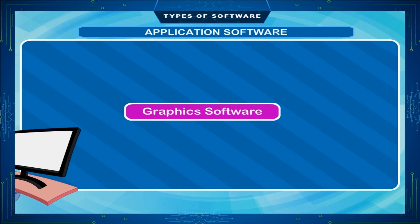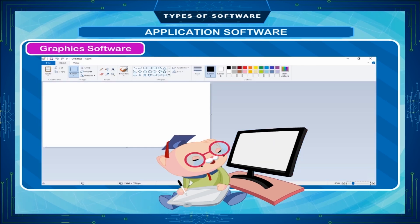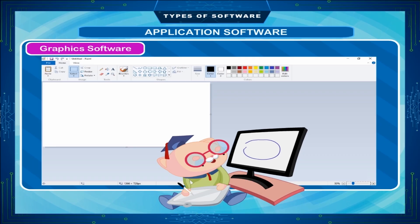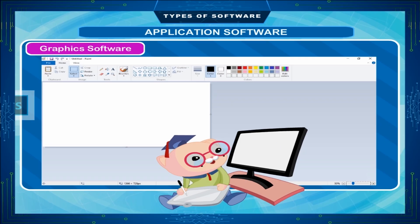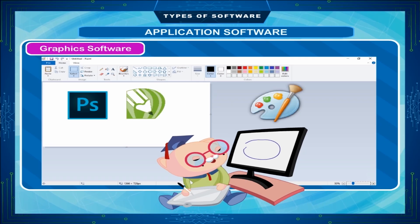Graphics Software. You can create drawings on a computer using graphics software. You can change colors, shades, and effects as many times as needed. Paint is an example of graphics software. Some other examples are Photoshop, Corel, and Paint.